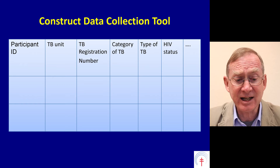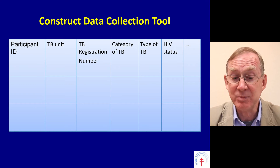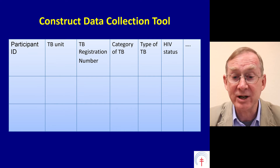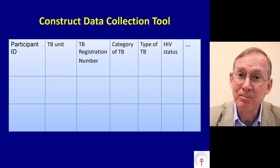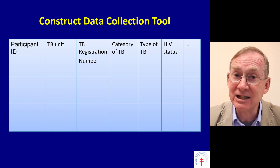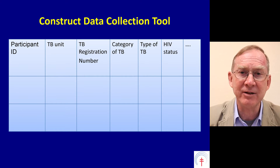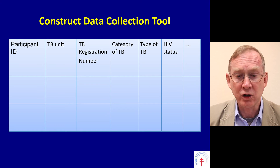So this was our data collection tool, showing very simply: the participant ID number, the TB unit, the TB registration number, the category of TB (new or previously treated), the type of TB — smear positive pulmonary TB, smear negative pulmonary TB, extra-pulmonary TB — and HIV status: positive, negative, indeterminate, or not done.